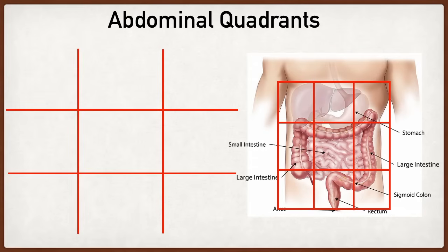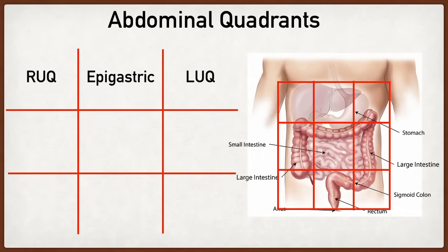Starting with the top row, which represents the upper or superior portion of the abdomen, we have the right upper quadrant, also known as the right hypochondriac region. Then we move over to the epigastric region, and lastly we have the left upper quadrant, also known as the left hypochondriac region.